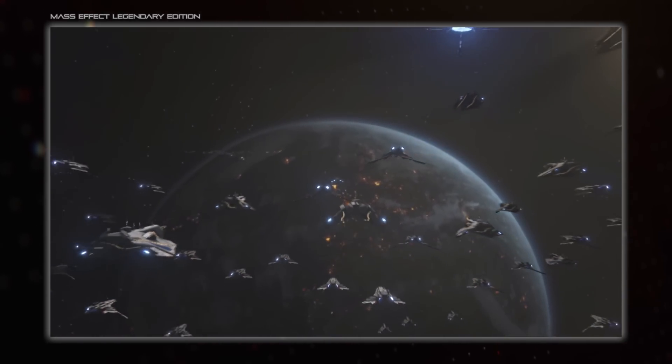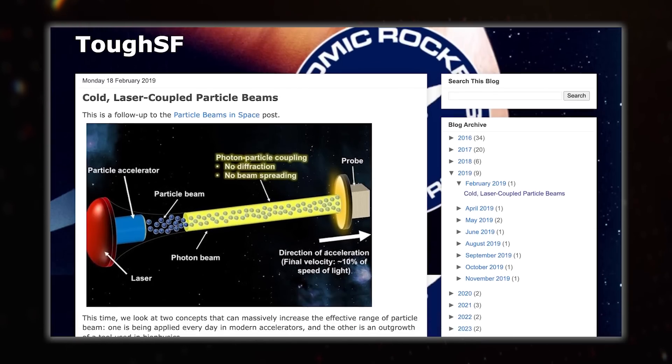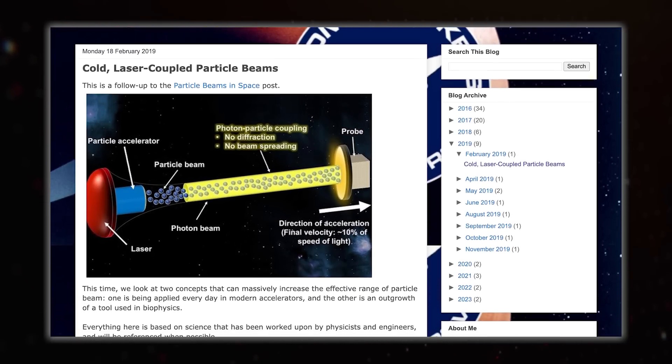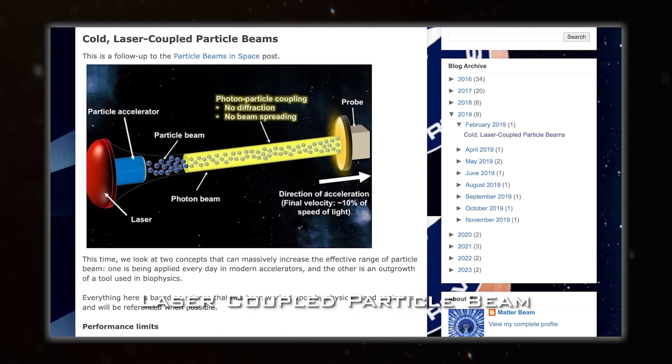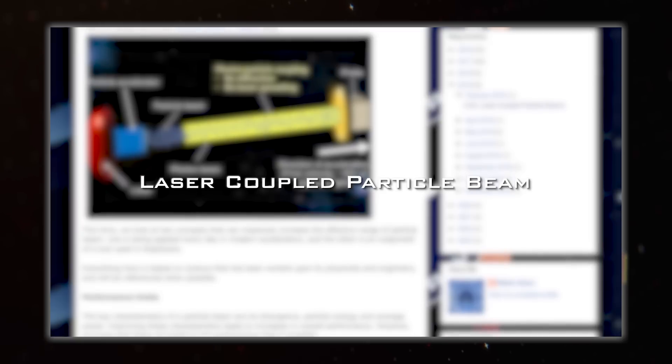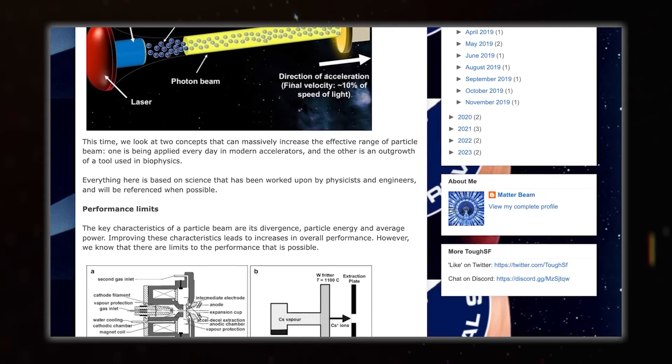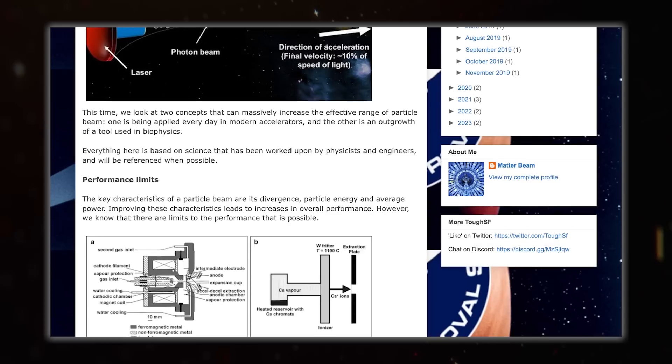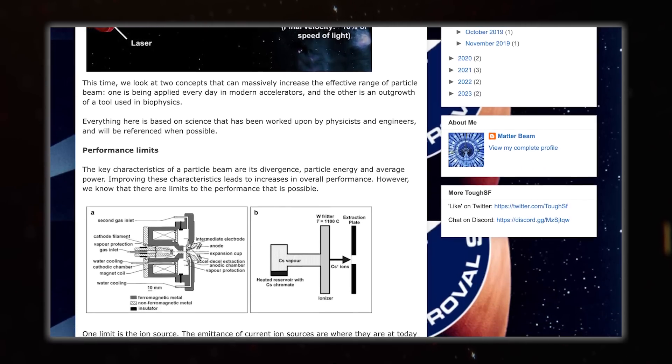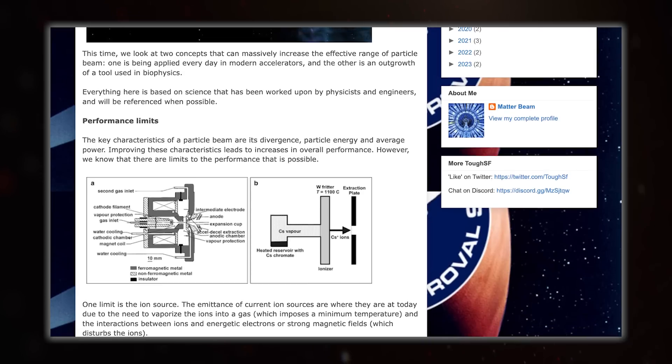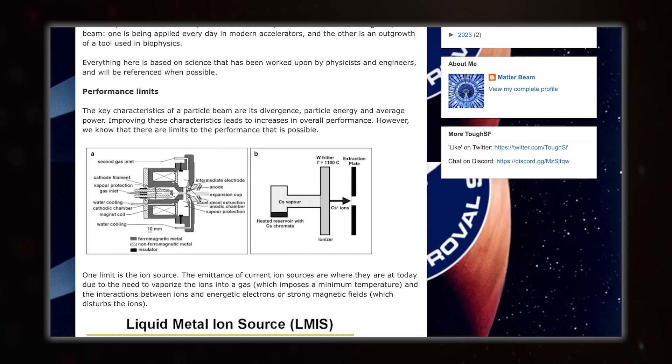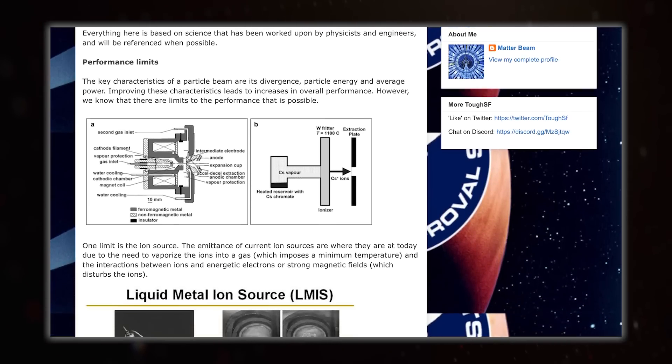The explanation for the third idea comes from Matterbeam's ToughSF blog, and it's about using a laser to improve the effectiveness of a particle beam by reducing its beam divergence, how much it spreads out over distance. This is bad for an energy weapon because it spreads out the energy in the beam over a larger area, making it less effective. And okay, yes, this one isn't really a laser weapon in and of itself, but it's still cool, and the laser is the bit that makes this special.